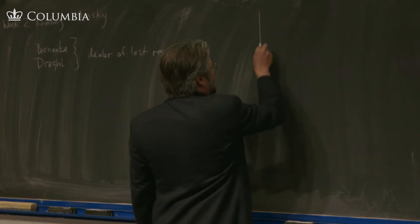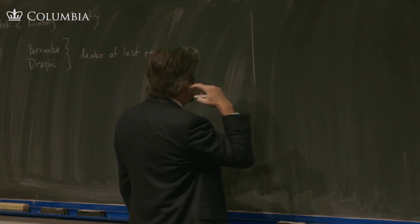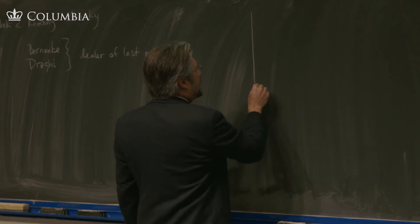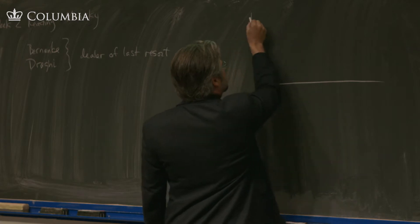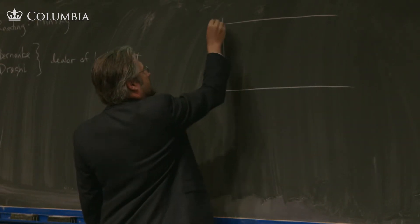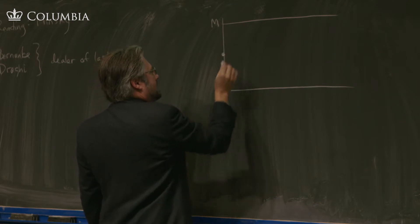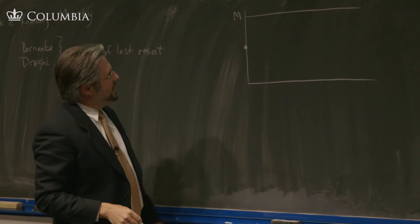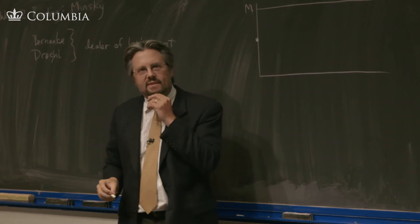So you can imagine that, and I put this in the notes here, you can imagine thinking about a world in which there's a fixed quantity of money here. A fixed quantity of money. And at any moment in time, we can therefore describe who has the money by a point. So this is time here.